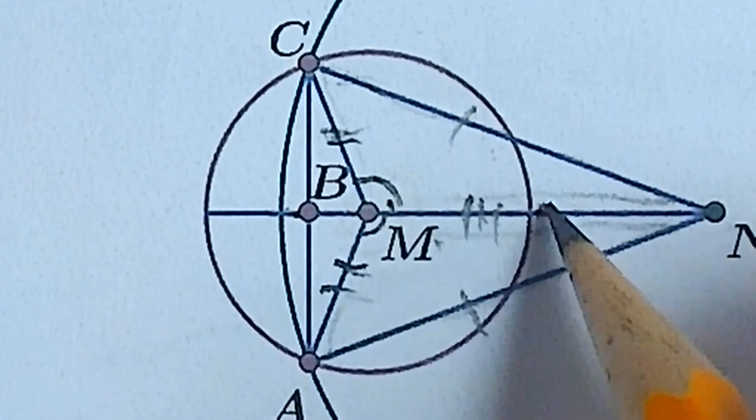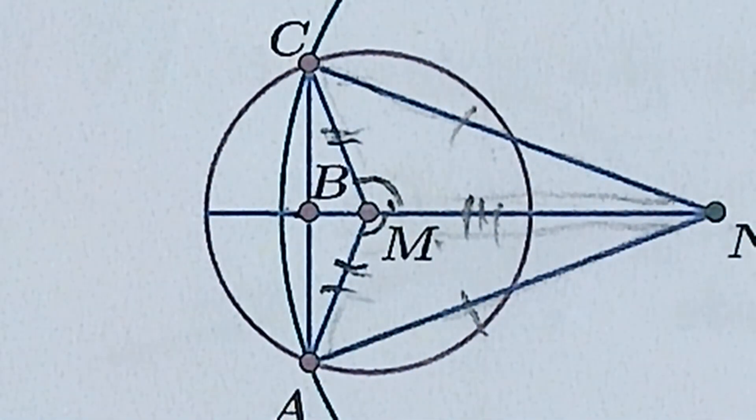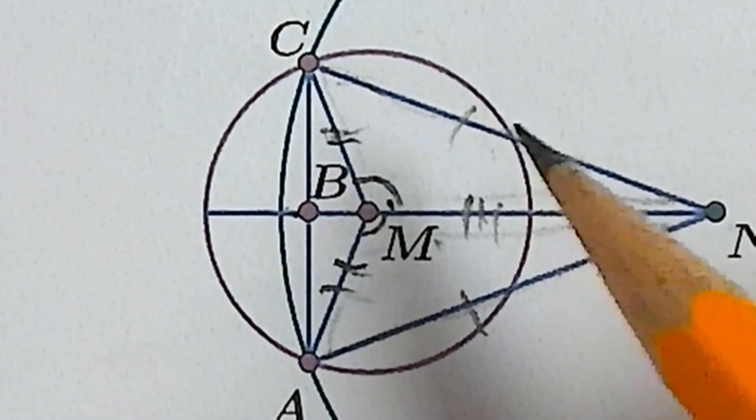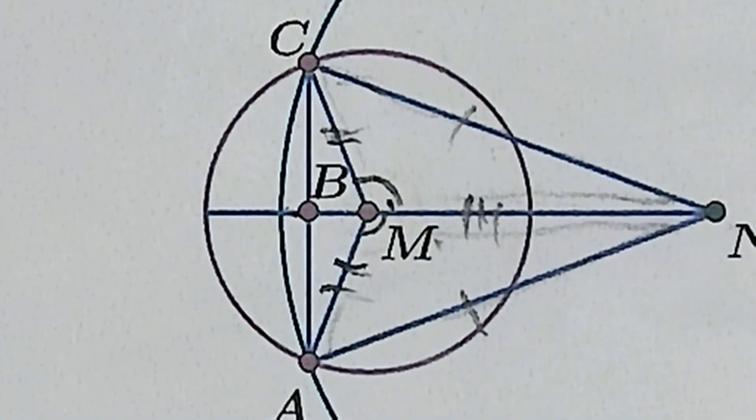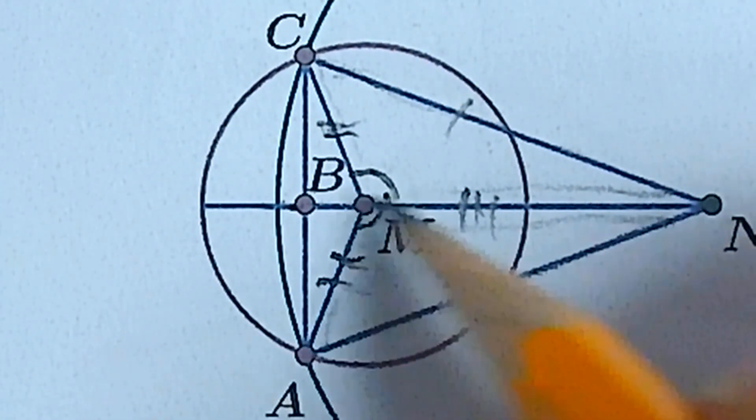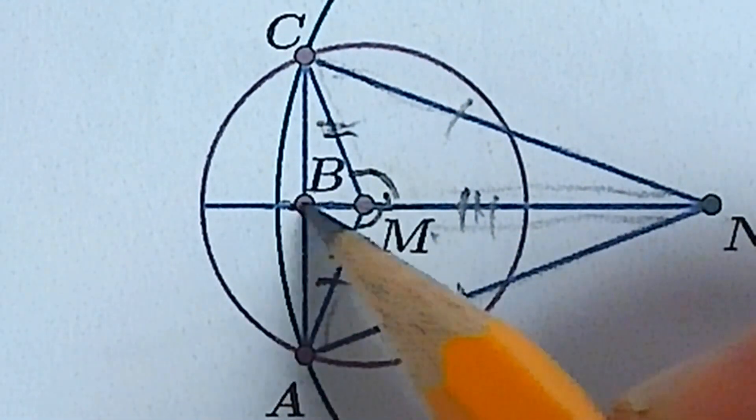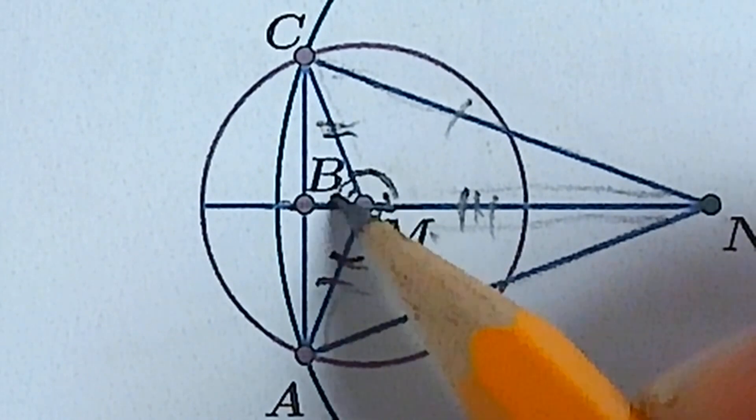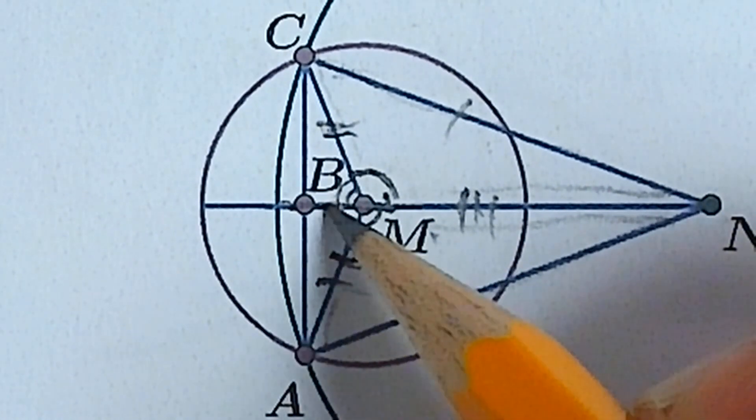And then therefore, because this is a straight line, so one thing you can trust from diagrams is that straight lines are straight, and lines that cross do cross. Other than that you can't trust anything from a diagram except the markings. Okay, so because this is a straight line and straight lines always have 180, this angle in here has to be congruent to this angle in here.